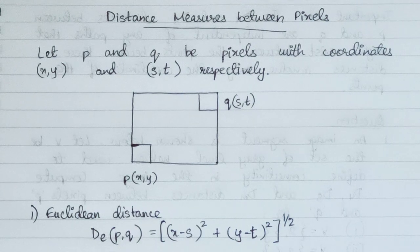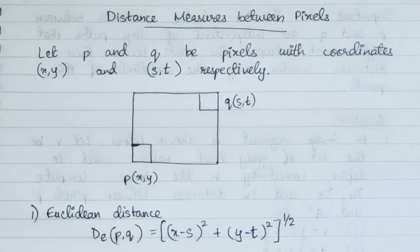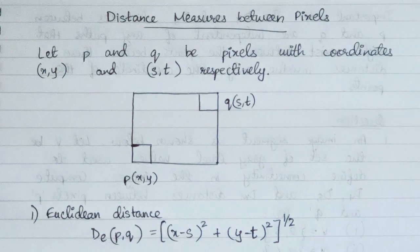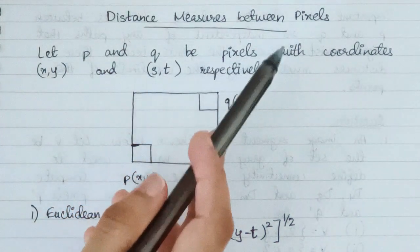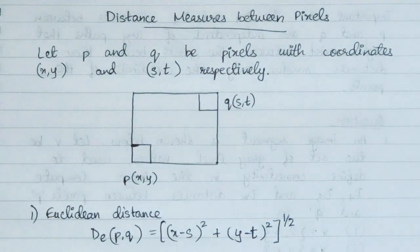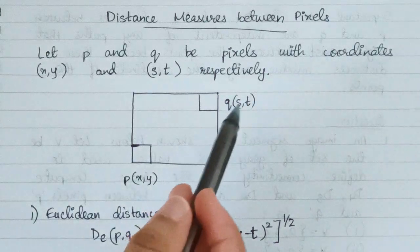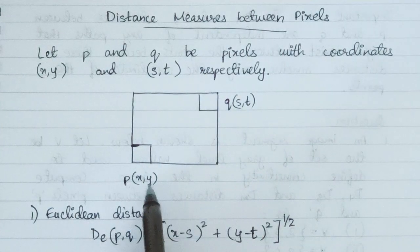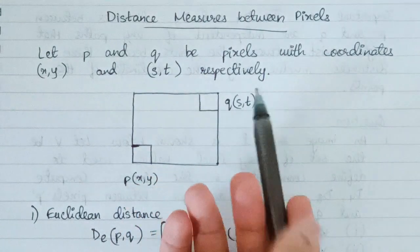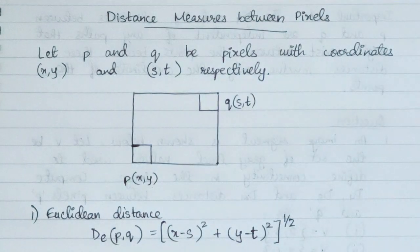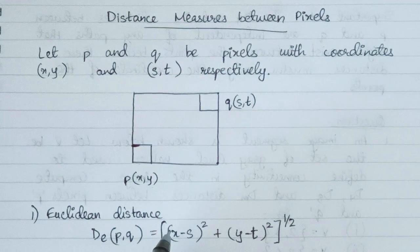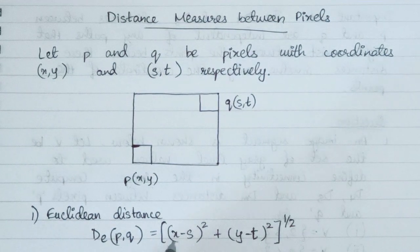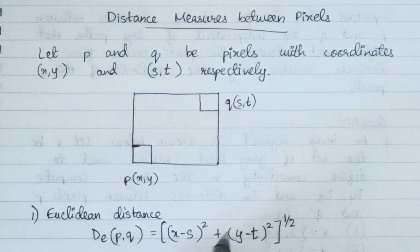Welcome to the fifth lecture of the DIP series. Today we're going to talk about distance measures between pixels. If we have two points p and q with coordinates (x, y) and (s, t), there are different distances which can be calculated. The first one is Euclidean distance, which is measured with the formula: square root of (x minus s)² plus (y minus t)².